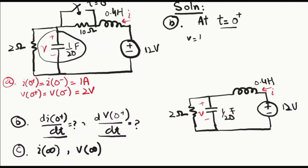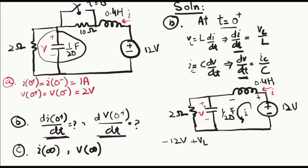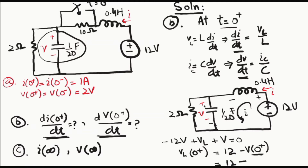The inductor voltage equals L × di/dt, so di/dt equals VL divided by the inductance value. Similarly, capacitor current i equals C × dv/dt, so dv/dt equals capacitor current divided by capacitance. Applying KVL in this loop: −12 + VL + VC = 0. At t equals zero positive, VL(0+) = 12 − VC(0+) = 12 − 2 = 10 volts.